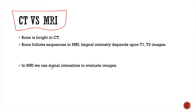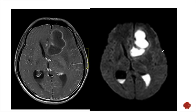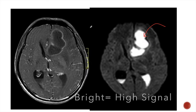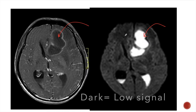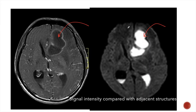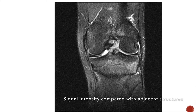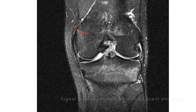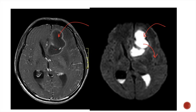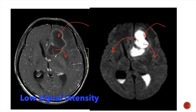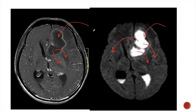In MRI, we use signal intensities to evaluate images. A very bright object is said to be of very high signal and a dark object is said to be of low signal. The signal intensity is compared with the adjacent structures — like in the brain, we can compare with the brain parenchyma. In this case, we can compare the signal intensity of a lesion with the adjacent brain parenchyma. In the musculoskeletal system, we compare the signal intensity of the lesions with the muscles. In this image, the lesion appears darker compared to the brain in the first sequence and brighter compared to the brain in the second sequence. In radiological language, it is said to be of low signal intensity in the first sequence and of high signal intensity in the second sequence. Various combinations of signal intensities of lesions in various sequences of MRI help us to make a diagnosis.